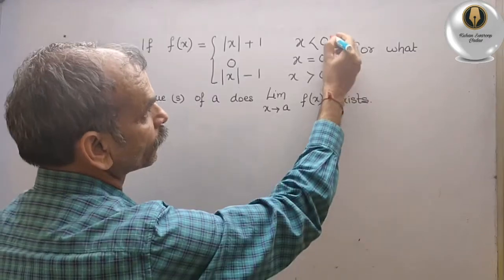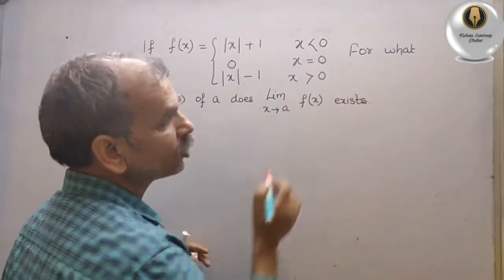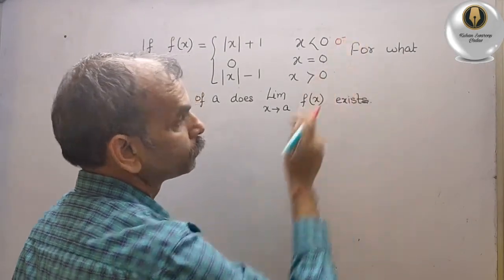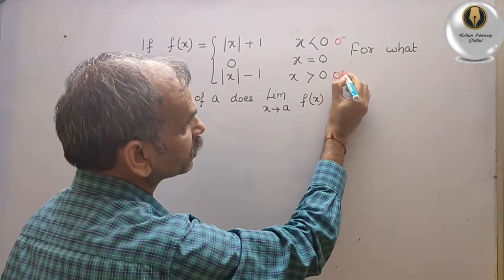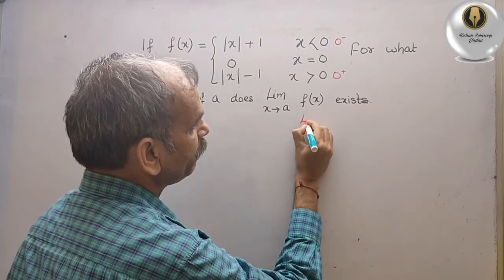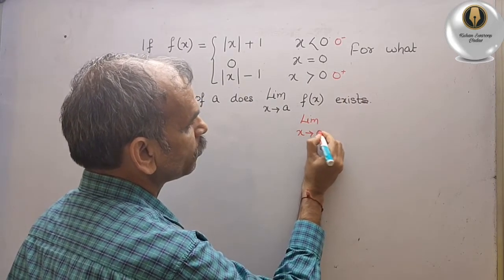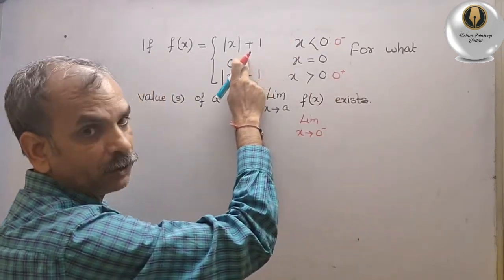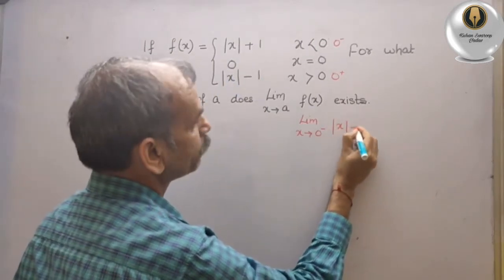If x is less than 0, that means we look at 0 minus; if x is greater than 0, that means 0 plus. First we will find the limit as x tends to 0 minus. For 0 minus, we have to take the value modulus of x plus 1.